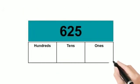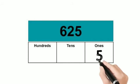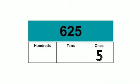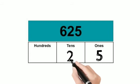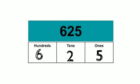Next question. The number is 625. Starting from the left, 5 is in the ones place. The next number is 2 — 2 is in the tens place. And the last number is 6 — 6 is in the hundreds place. 625.